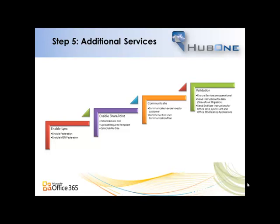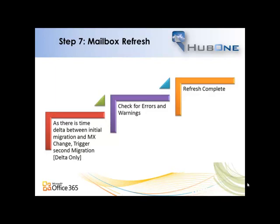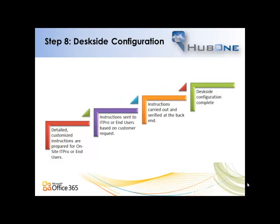We also send end user instructions for the Office 2010 Lync client and the Office 365 desktop applications. We then ask the customer if they're ready to move the MX record, and when they are, we move the MX records and validate that mail flow is working with Office 365 — so now the customer has a fully operational Office 365 environment. Because there's normally a delta between when we move the MX records and when we migrated the data, we do a refresh migration just to make sure that the data is fully up to date. We then send detailed and customized instructions for how to set up the customer on-site, either for the IT team or the end users, and we check that they carried out those instructions and the users are running, which basically means they're fully migrated to Office 365.